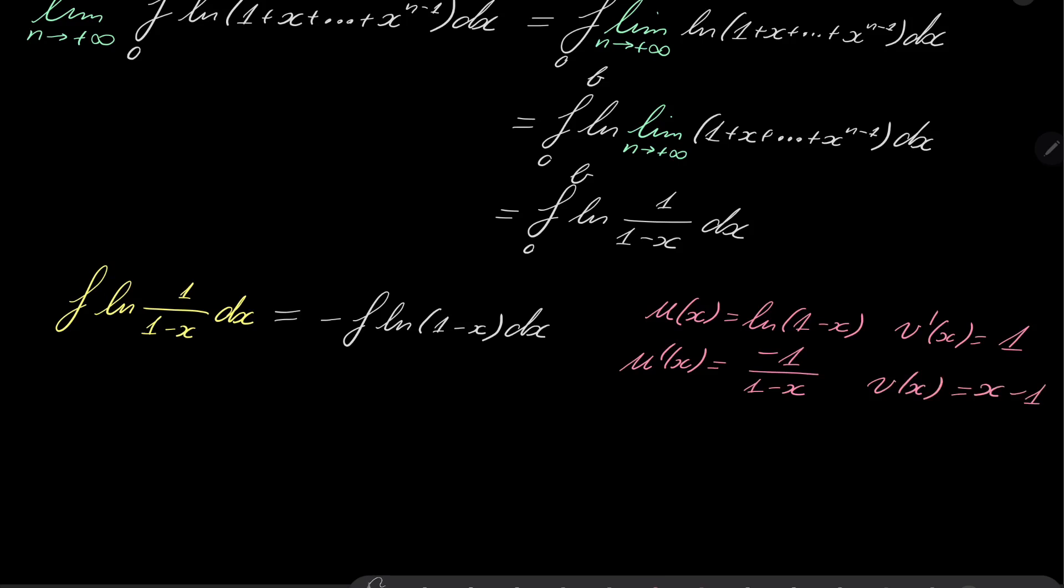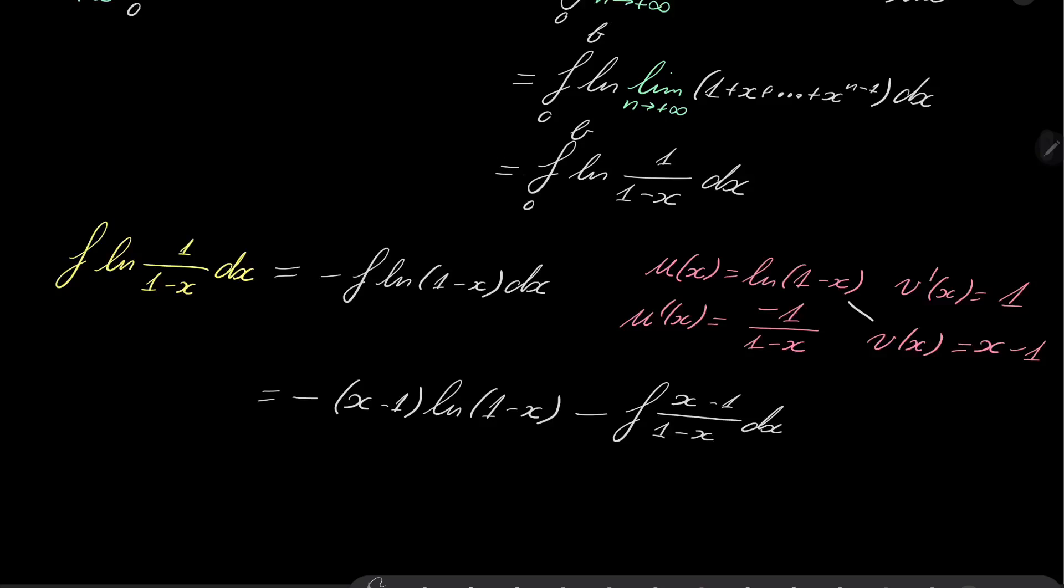And part which will be integrated will be 1. Notice that it is the derivative of x minus 1, so by integrating by parts, it's this times that, so it's minus x minus 1, natural log of 1 minus x, and now let's manage the minuses. Here we have 1 minus, here we have a second minus, and here we have a third minus, so it will be minus the integral of x minus 1 over 1 minus x dx.